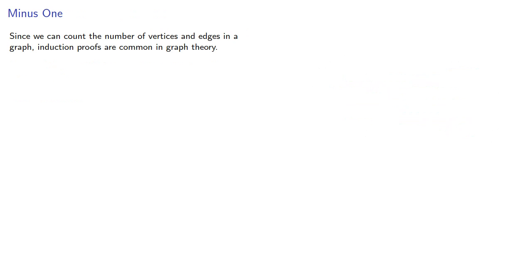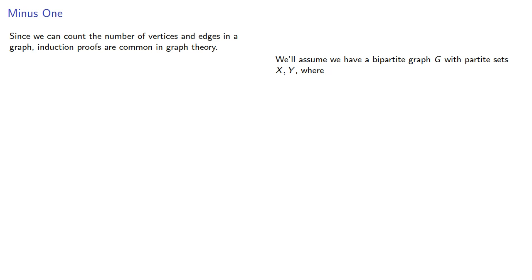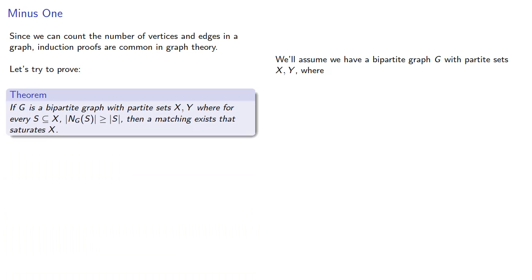Since we can count the number of vertices and edges in a graph, induction proofs are very common in graph theory. We'll assume we have a bipartite graph with partite sets x and y, and try to prove the obvious necessary condition also suffices. Clearly the theorem is true if x has cardinality 1.